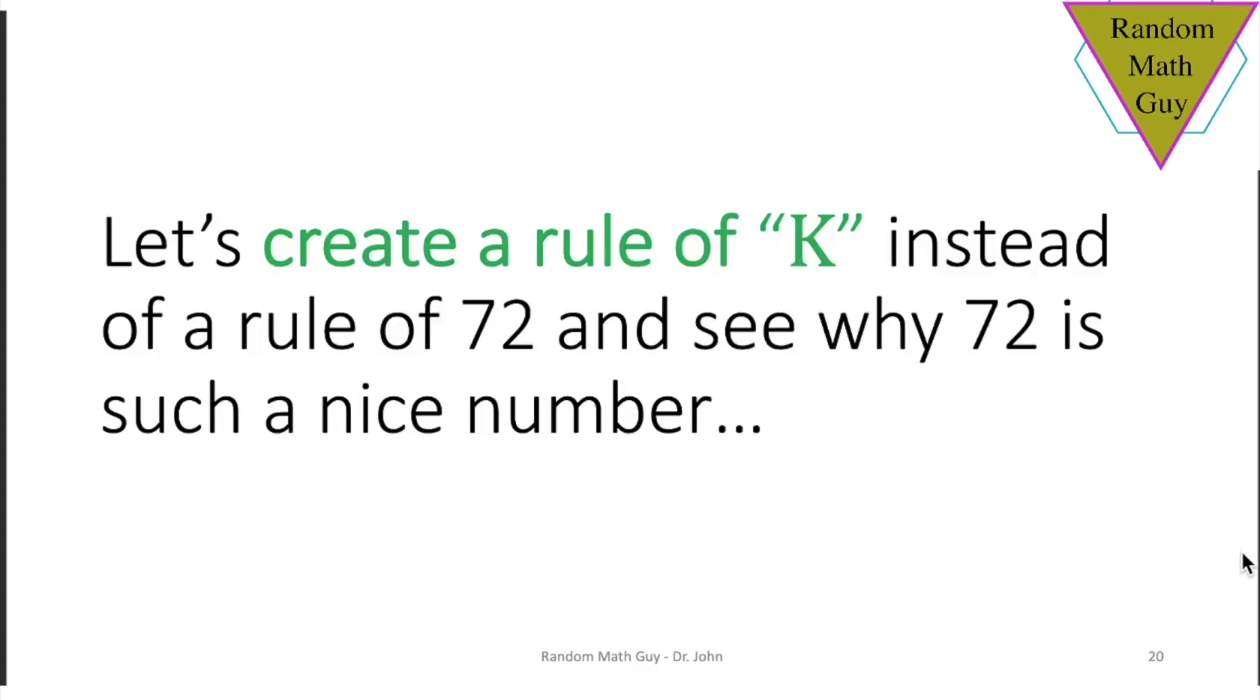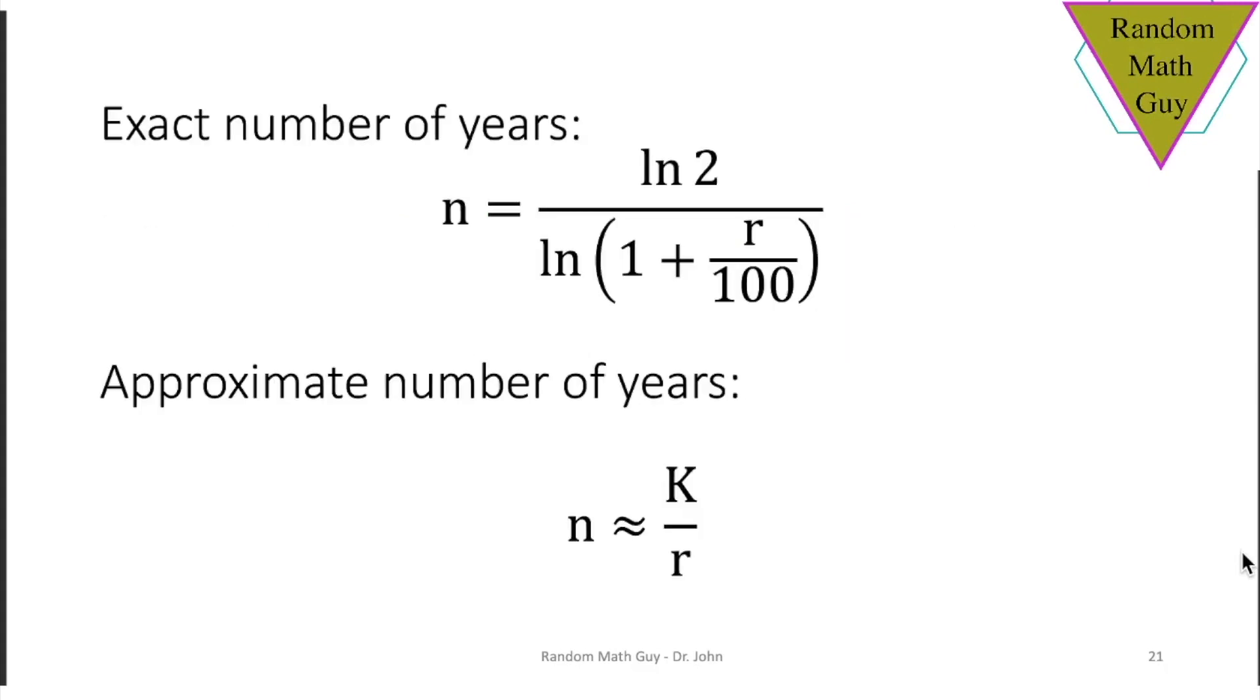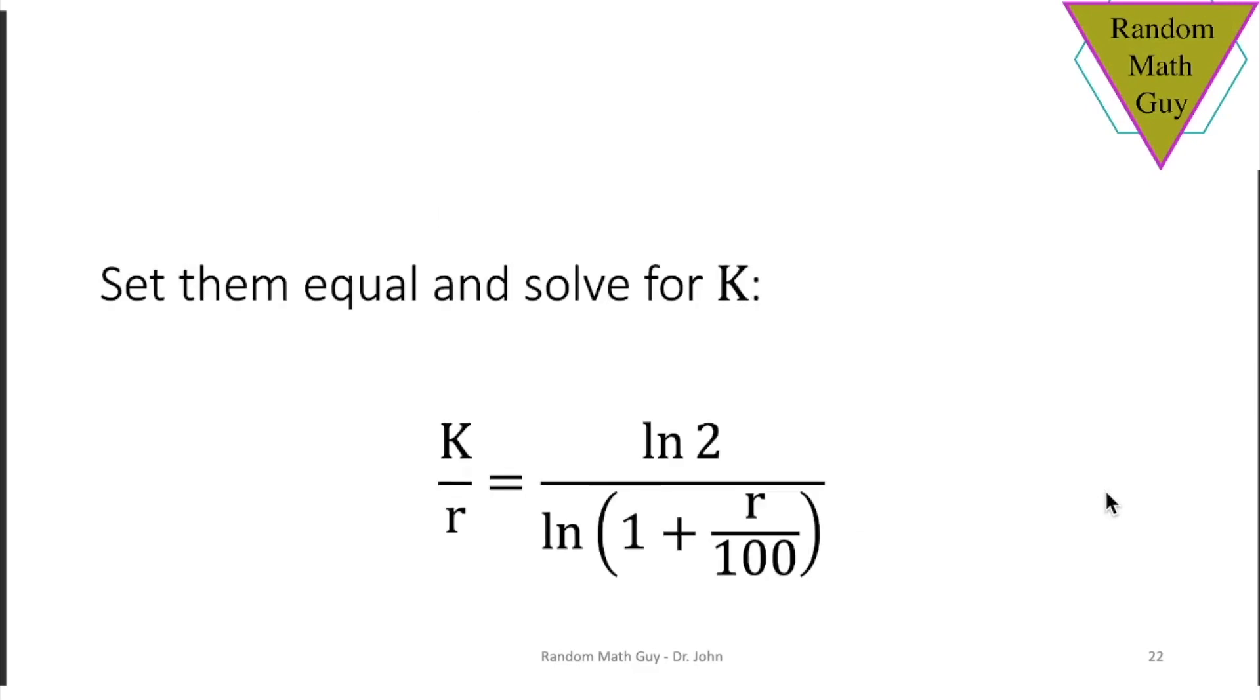So instead of talking about the rule of 72, why don't we instead create a rule of K, where K, for example, could be 72 or any other nice number that you like so that you can tune it to whatever rates of return you are considering in your application. So again, remember, we have the exact amount of time to double and the amount of time based on our rule of not 72 this time, but rule of K. So we can actually just set those equal to each other and then solve for K. So let's do that here.